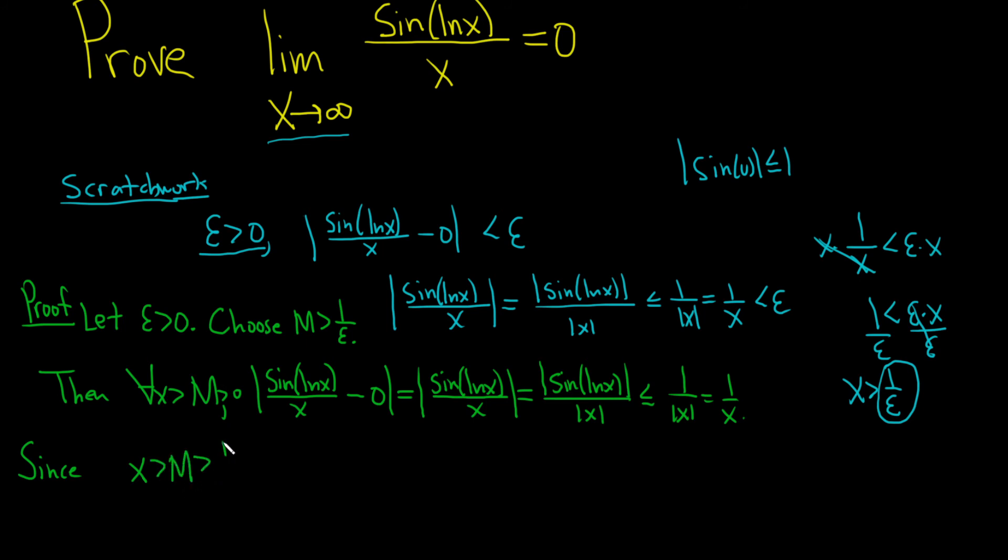Since x is bigger than m, which is bigger than 1 over epsilon, we have, this is the beautiful part, x bigger than 1 over epsilon. So that means epsilon x is bigger than 1. So epsilon is bigger than 1 over x. You see what I did there? So I got to the part where I wanted to say it's less than epsilon.